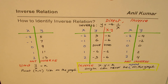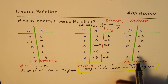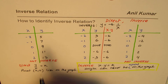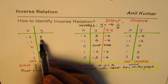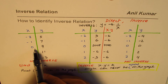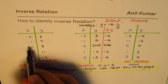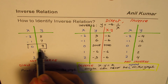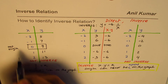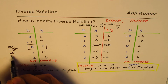Now let's try the first table for direct. We find the ratios: 5 over minus 2, 7 over minus 1, and then 9 over 0. When X equals 0 but Y equals 9, that point is not the origin — it is not (0, 0). Since it is not the origin, this relation cannot be direct either.